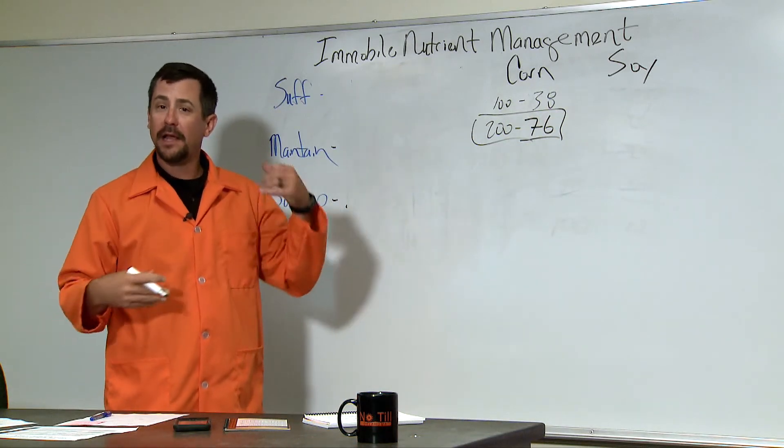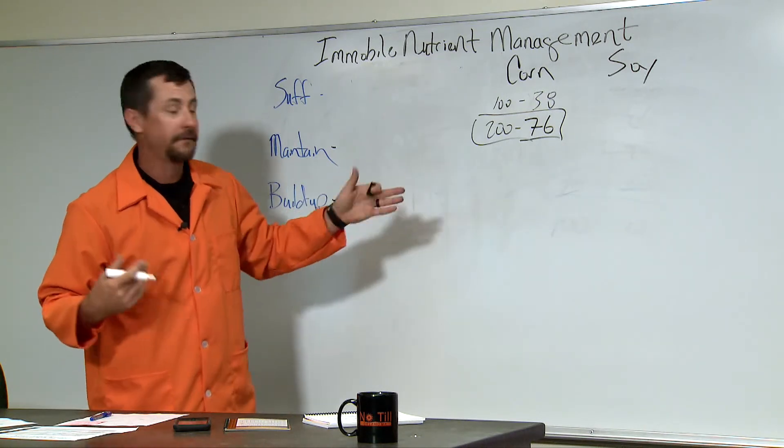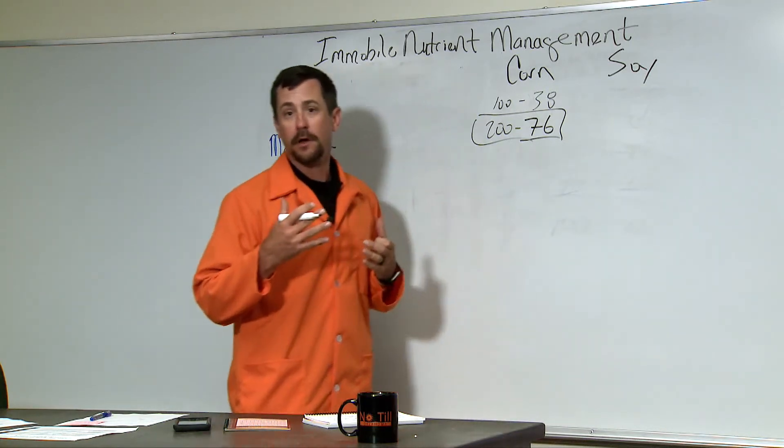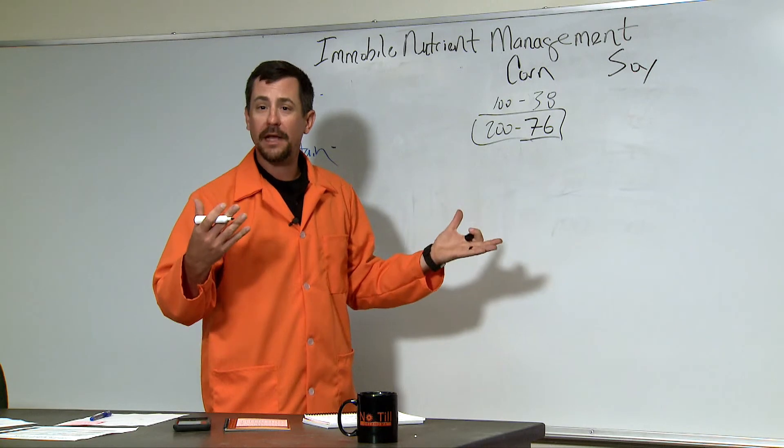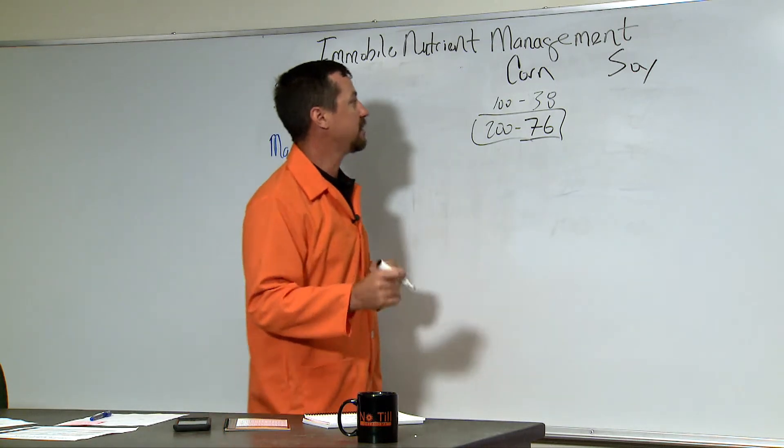Up in the Great Plains on the irrigated corn in the Panhandle where they're growing 240, 250, you're removing very close to almost 100 pounds of phosphorus. You remove 100 pounds every year consistently over time, you will deplete the soil system.